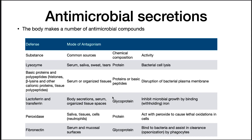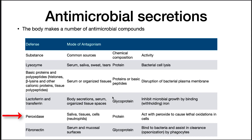A chemical barrier cells have is antimicrobial secretions. The body makes a number of antimicrobial compounds. For example, lysozyme — secreted in serum, saliva, sweat, and tears — will lyse cells. Basic proteins and polypeptides like beta-lysins and cationic proteins bind to membranes and disrupt them. Lactoferrin and transferrin bind and sequester iron, keeping this essential element away from pathogens. Peroxidase in saliva and neutrophils produces peroxide, causing lethal oxidations. Fibronectin binds to bacteria and assists in their clearance by phagocytes.